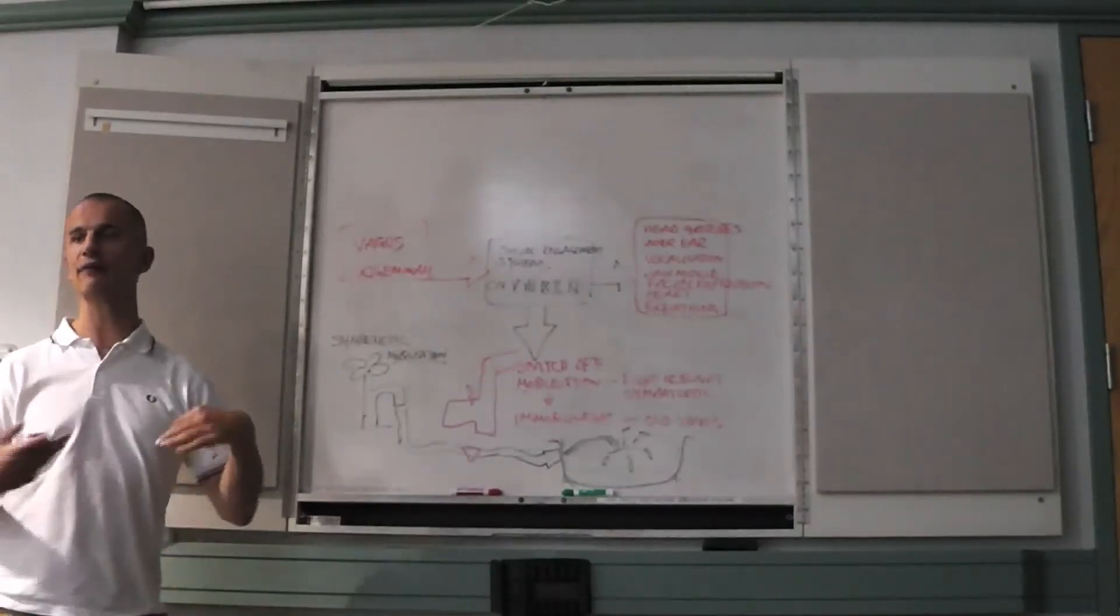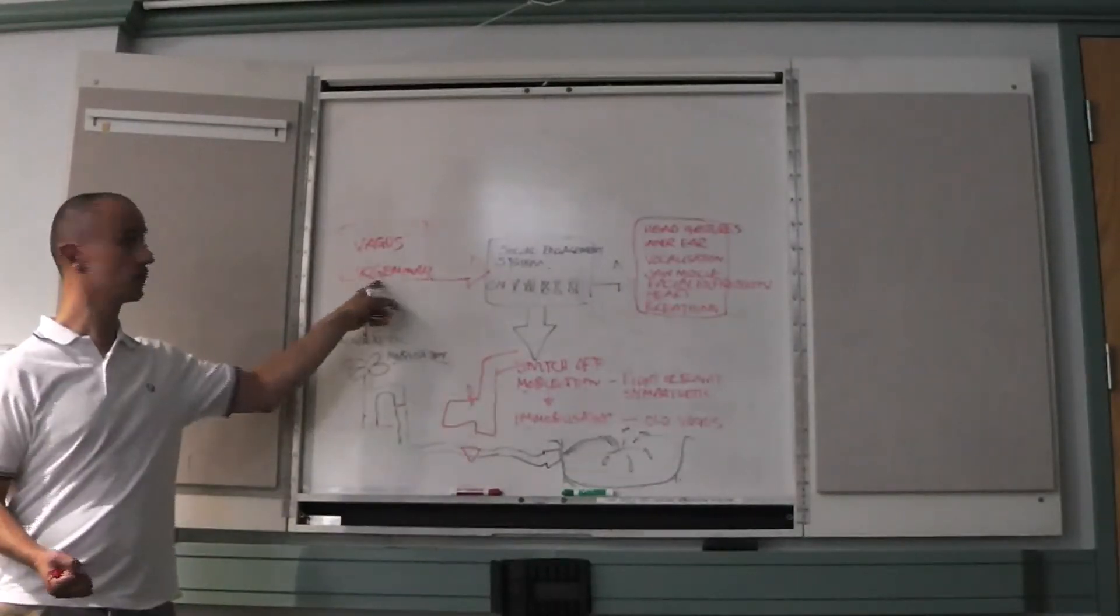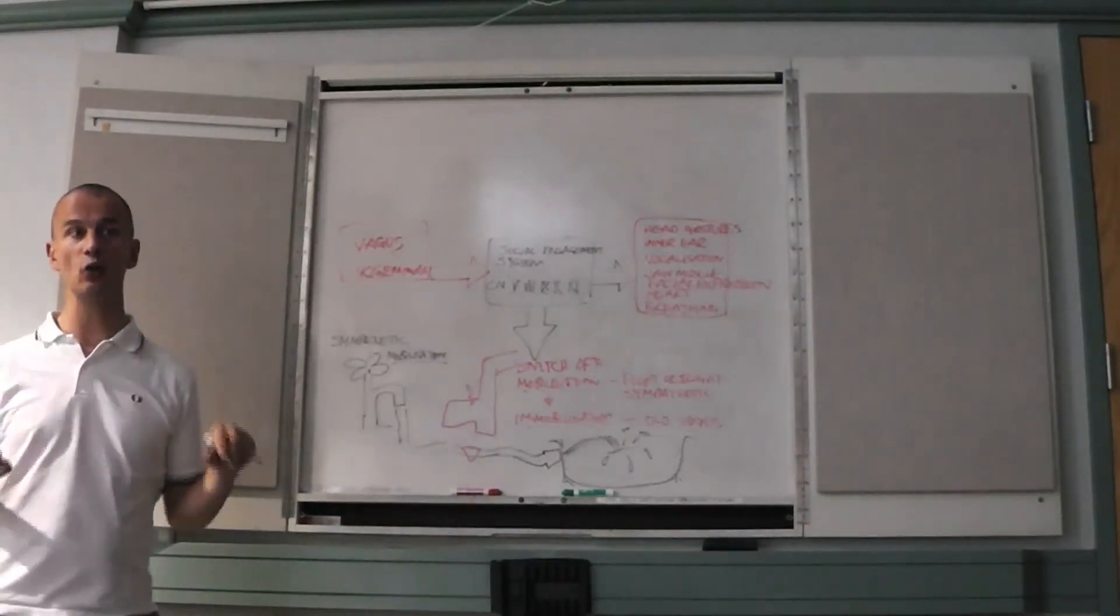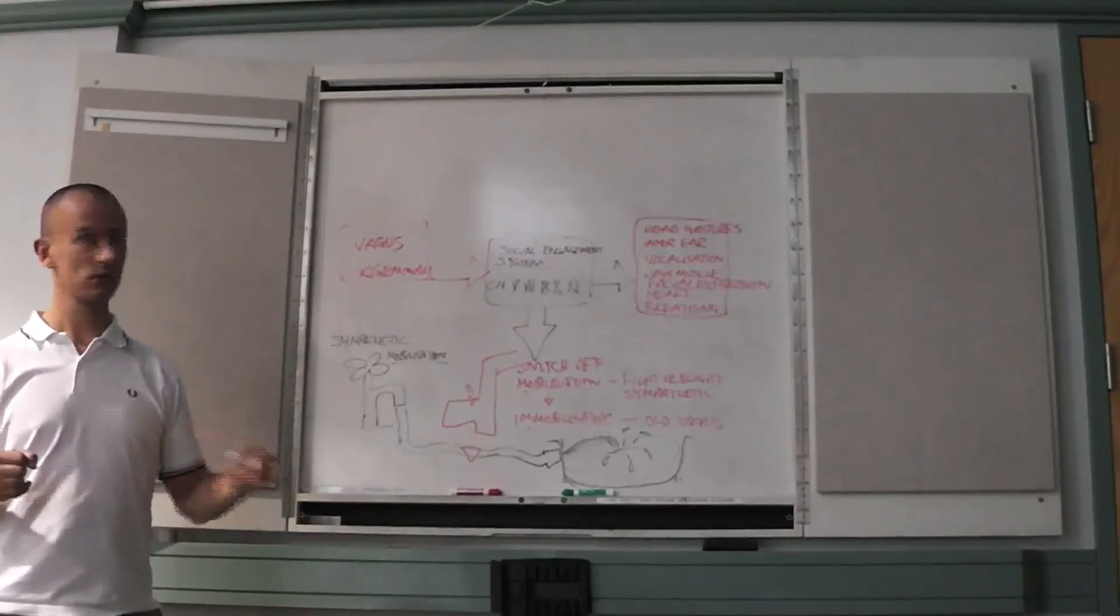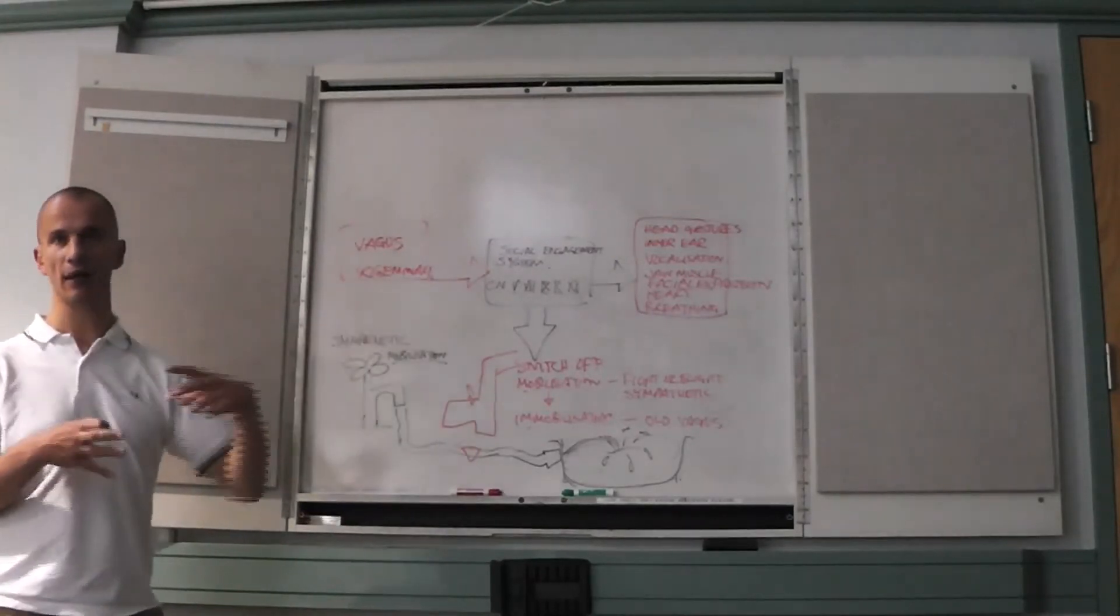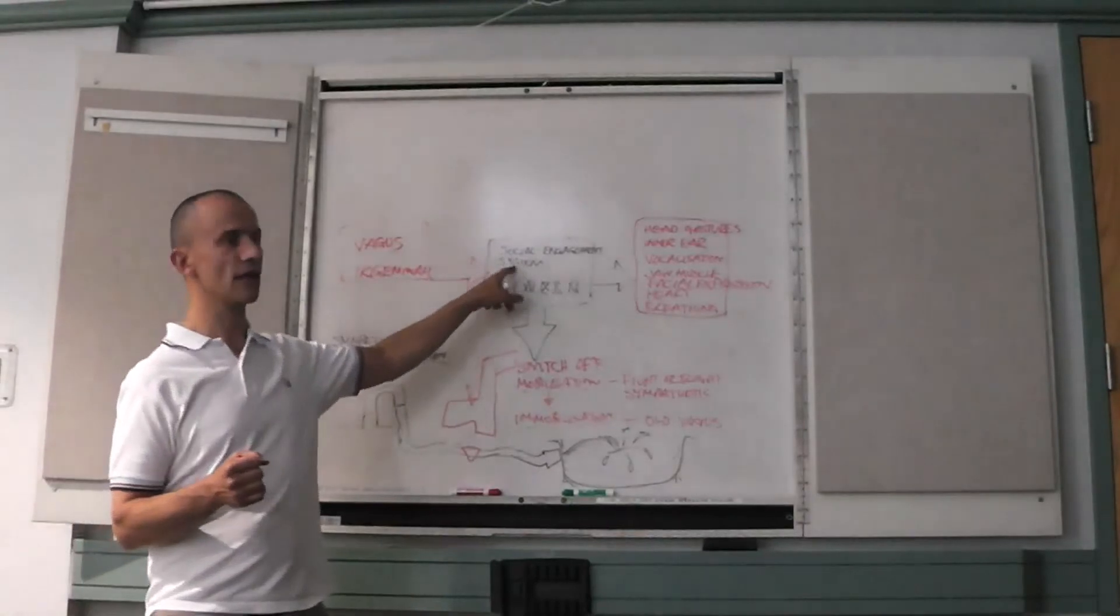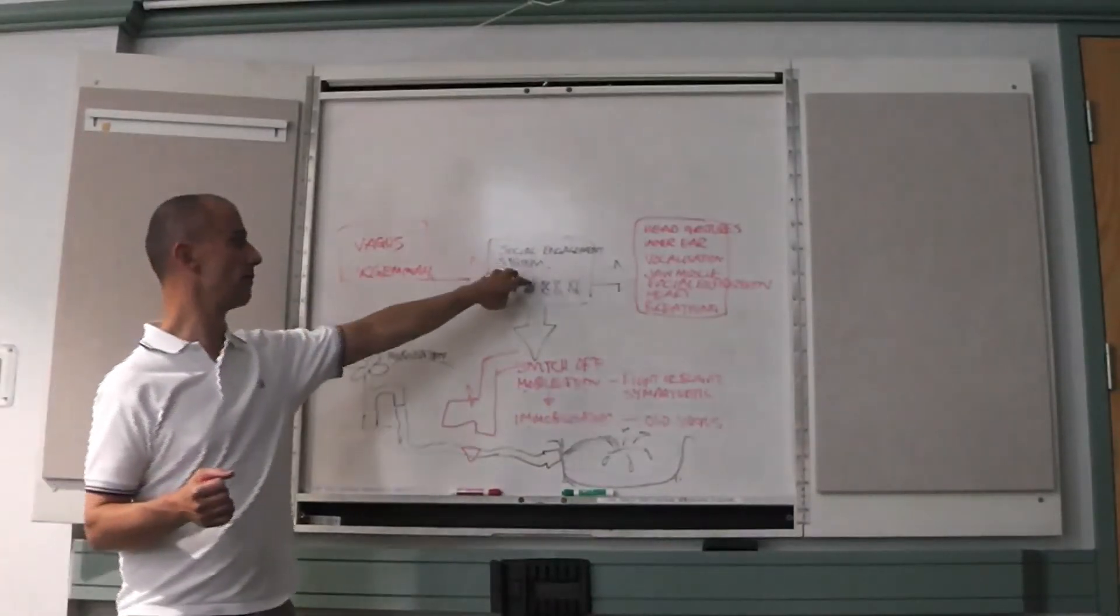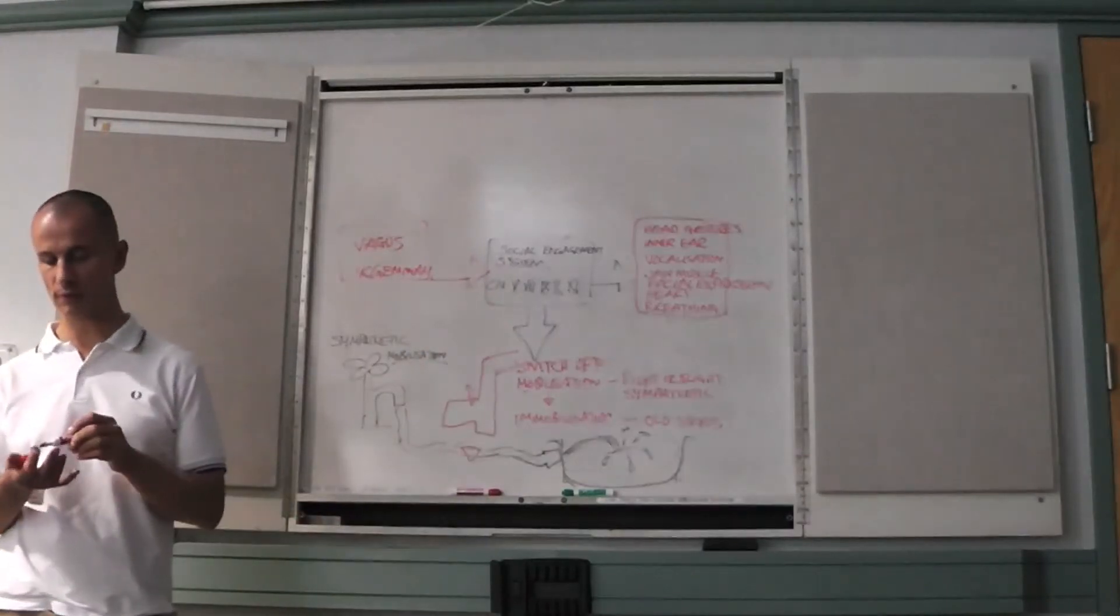So the vagus is all that information from the inside of the body. The trigeminal for cranial people is around the jaw and all the dural membranes. This is an explanation for why a bone moving in the skull is going to help us feel safer because it switches on, it makes the social engagement system work much better.